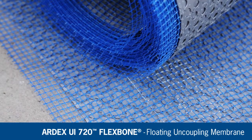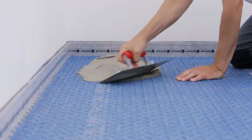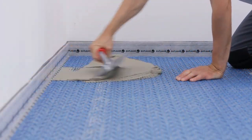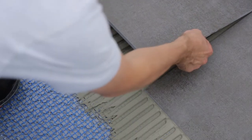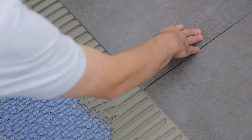The Ardex UI 720 FlexBone floating uncoupling membrane is the first and only unbonded uncoupling system that can cut installation time in half and is the perfect solution for difficult substrates.